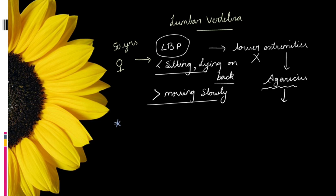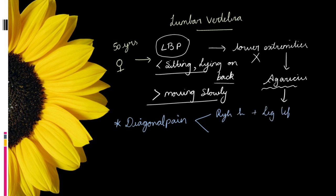Along with low back pain, Babu has a diagonal pain pattern: if he has pain in the right hand, he will have a problem in the left leg, and if there is a problem in the left hand, he will have a problem in the right leg. Whenever there is this diagonal pattern of rheumatism, we can think about Agaricus.